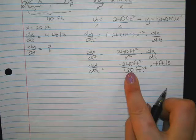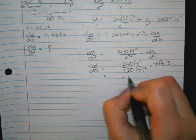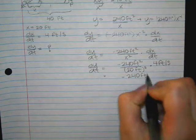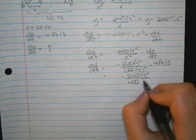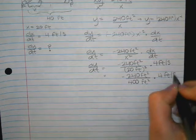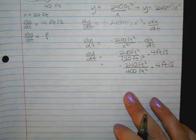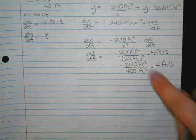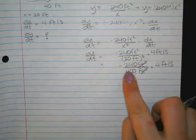That's negative 240 feet squared divided by 20 feet, which is being squared, times 4 feet per second. What's 20 squared? 400. So we have negative 240 feet squared. What are the units of that? 400 feet squared times 4 feet per second.